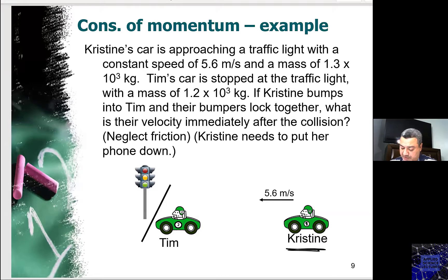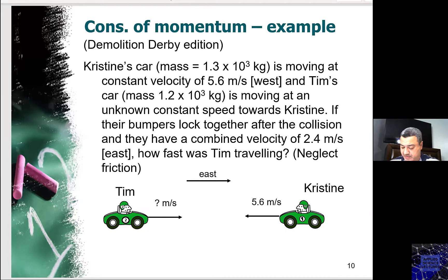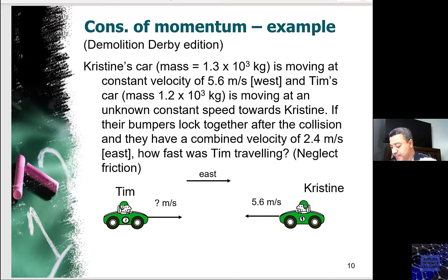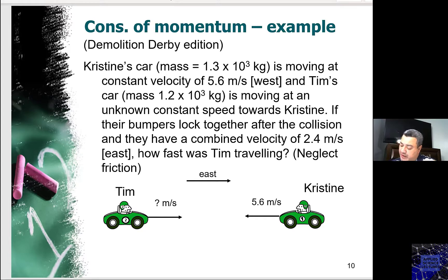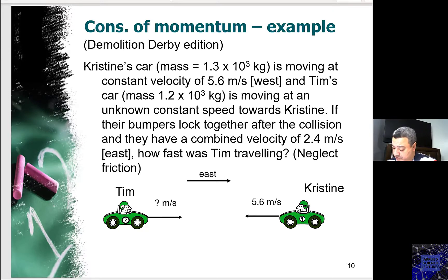Now let's look at this example. Both cars are driving with constant velocity. Christine's car is heading west at 5.6 meters per second, and Tim's car is heading east with an unknown velocity. They collide and their bumpers lock together after the collision, and they have a combined velocity of 2.4 meters per second east.